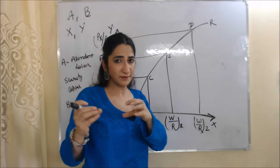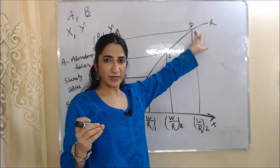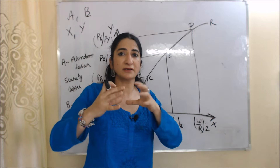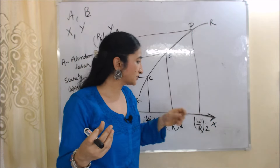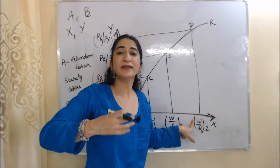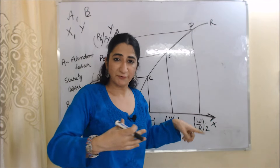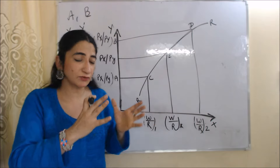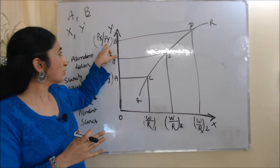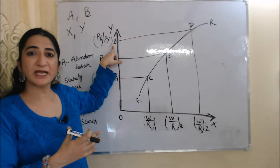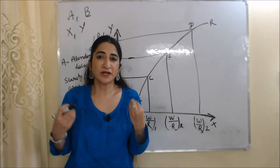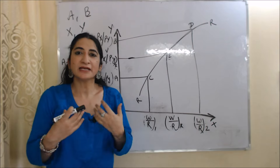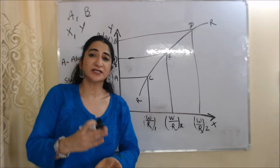Before trade, the equilibrium point of country B is D. As we know, country B has a scarcity of labor, so before trade wage rates are very high in country B. If wage rate is high, the price of labor intensive goods X is also high in country B. This Px/Py_B represents the price of good X in country B. Now suppose international trade starts.